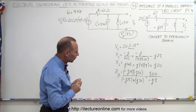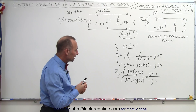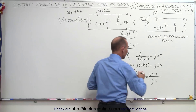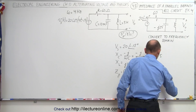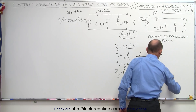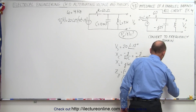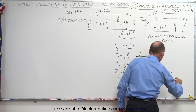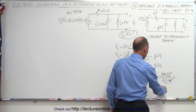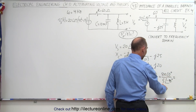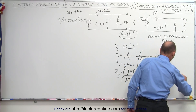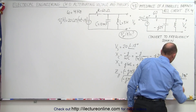Now we need to convert that into a magnitude and a phase angle. The numerator 500 has a phase angle of 0 degrees. The denominator minus j5 has a magnitude of 5 with a phase angle of minus 90 degrees. So we get 500 divided by 5, which is 100, and the phase angle is 90 degrees — giving us 100 at a phase angle of 90 degrees.